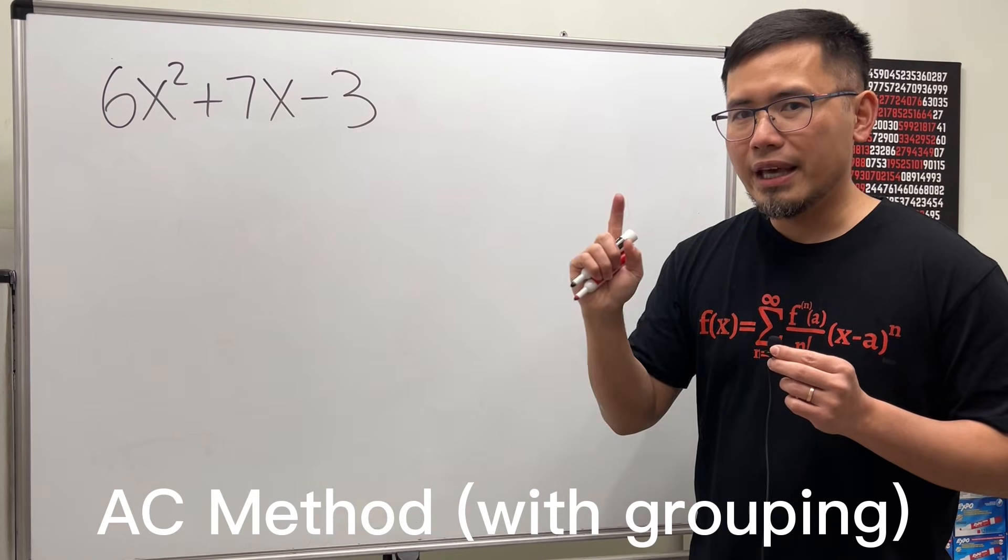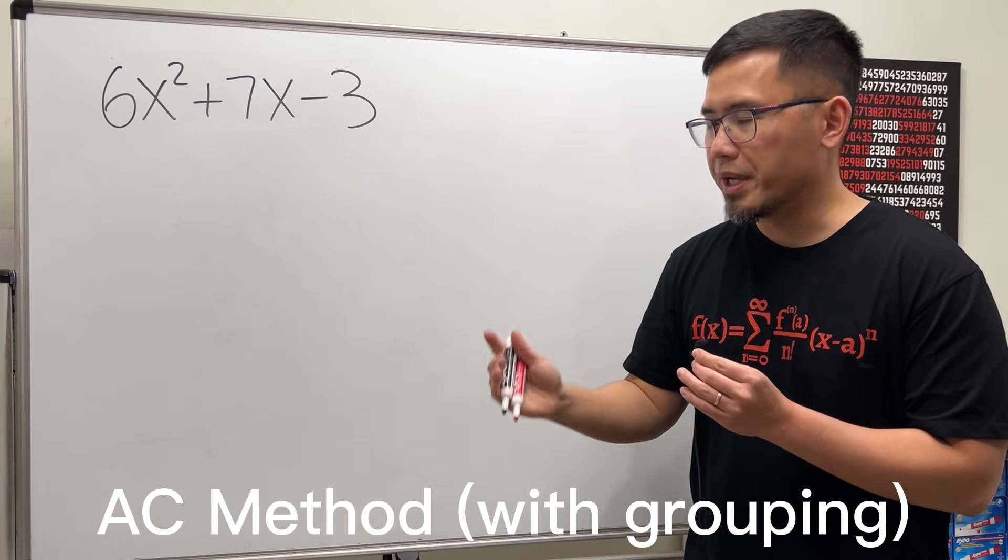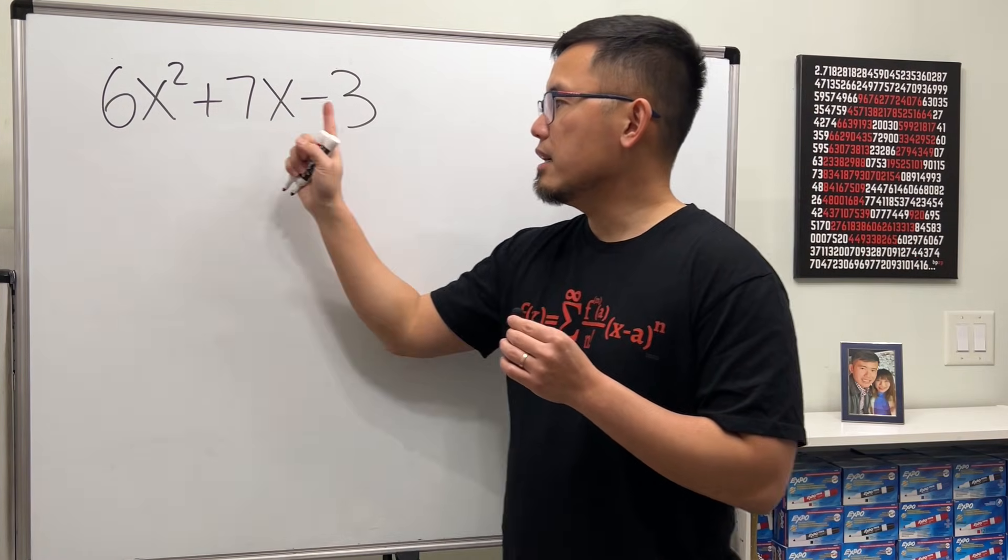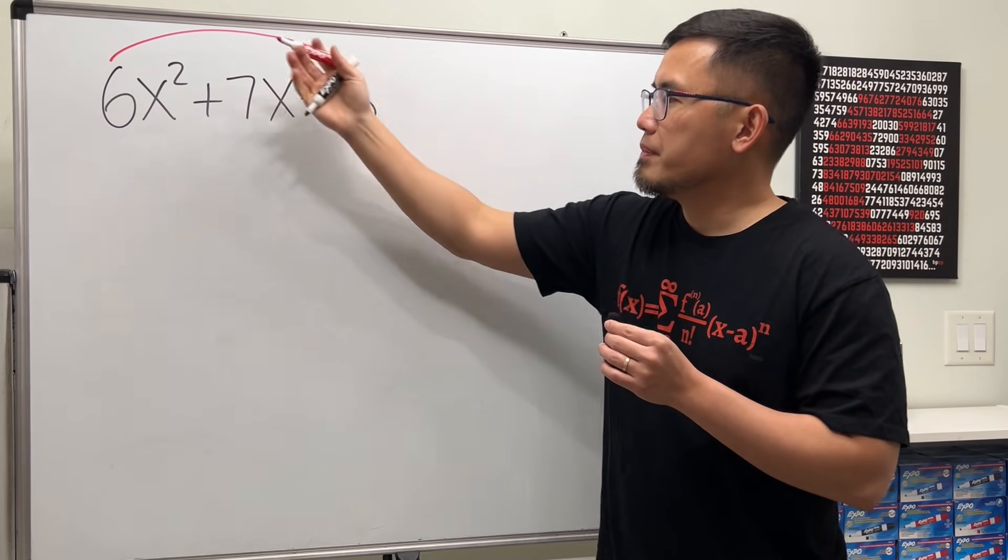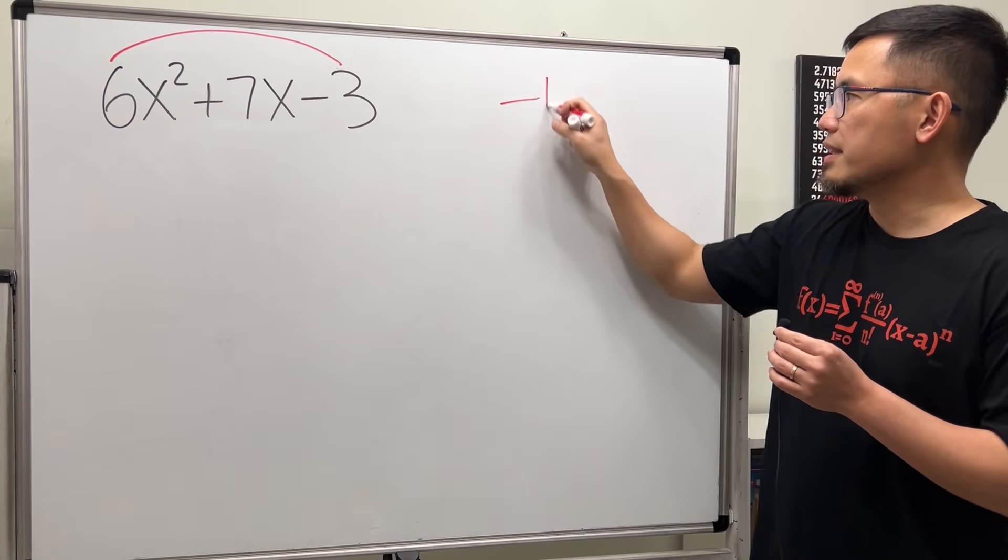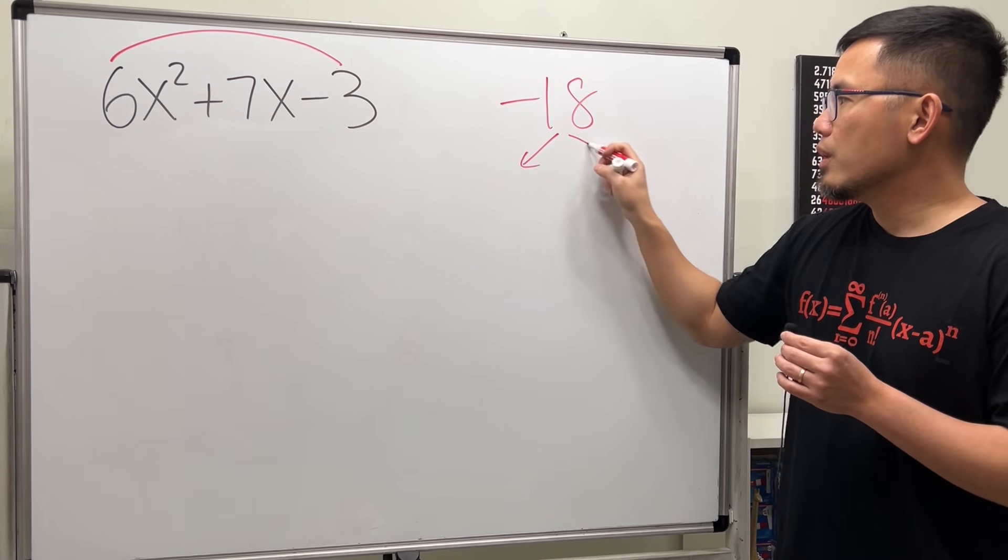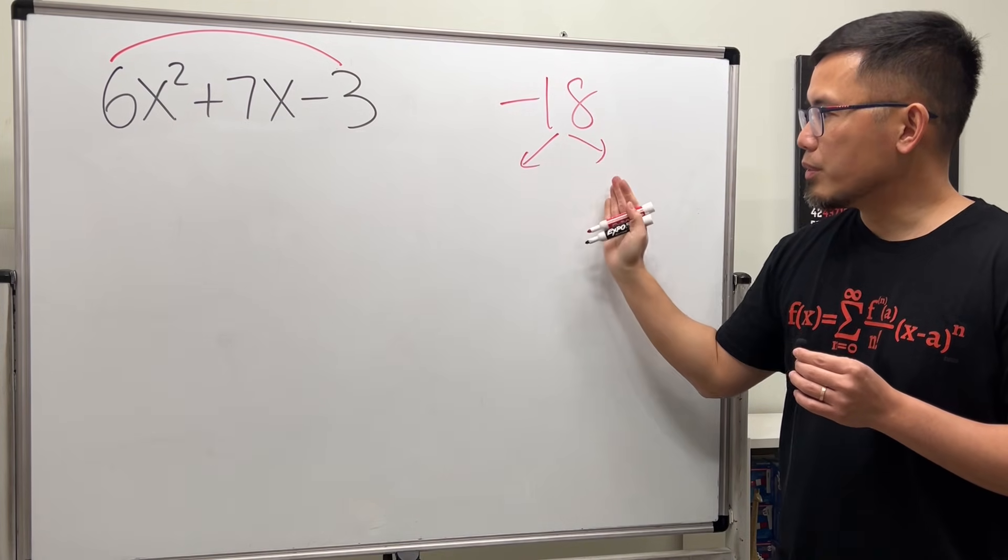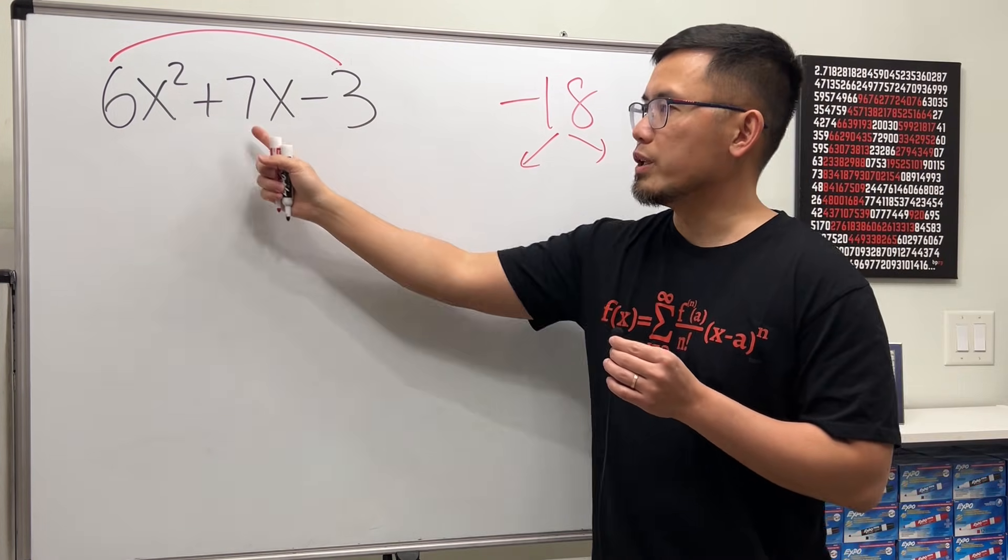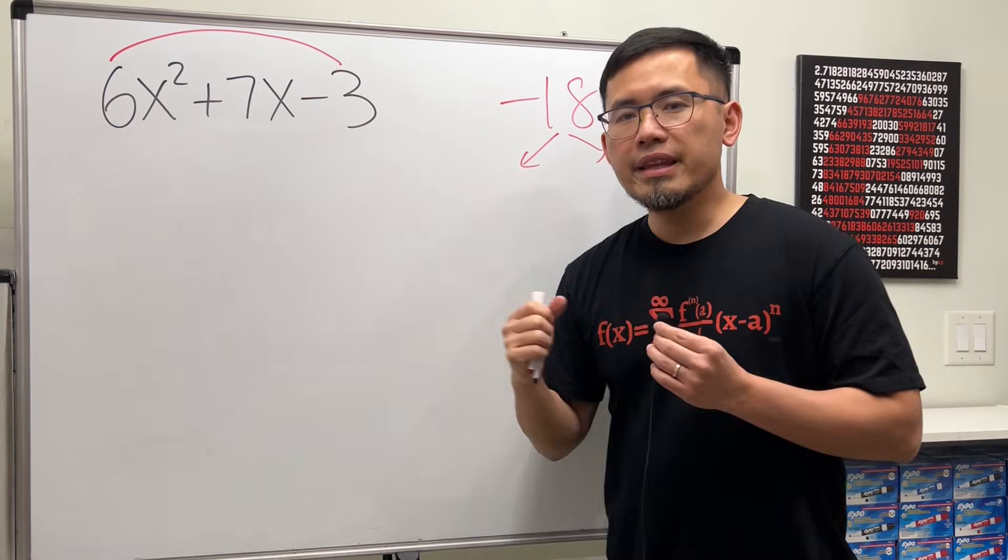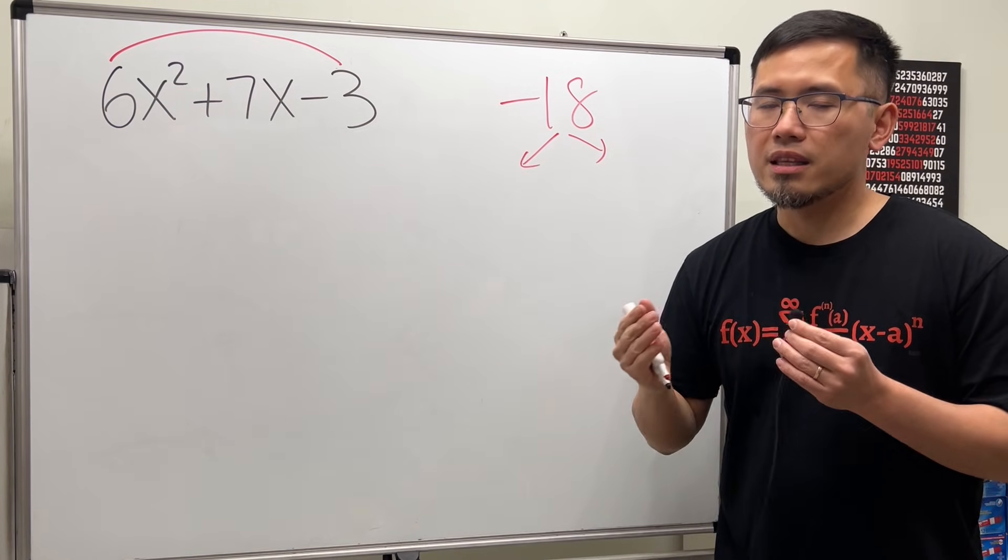The first way is called the AC method with grouping. This is the A, this is the C. We first multiply A and C together, 6 times negative 3, we get negative 18. Then, we have to think about 2 numbers that multiply to negative 18, and when we add them, we get positive 7. The correct combination is 9 and negative 2.